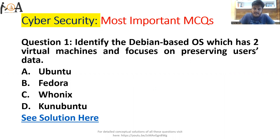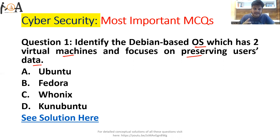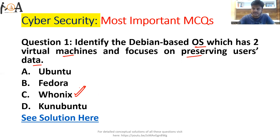Question number one: identify the Debian-based operating system which has two virtual machines and focuses on preserving user data. The options are Ubuntu, Fedora, Whonix, or Kubuntu. The correct answer is Option C — Whonix. It is a Linux-based, Debian-based operating system that has two virtual machines and completely focuses on preserving user data.